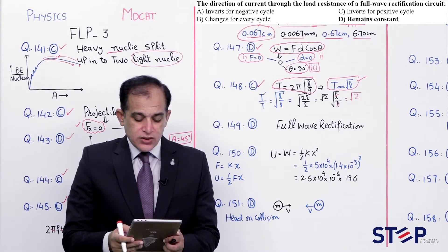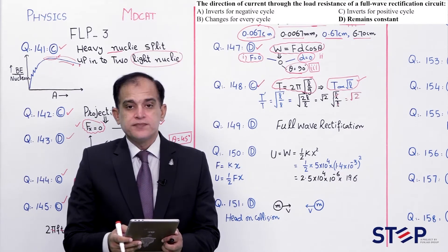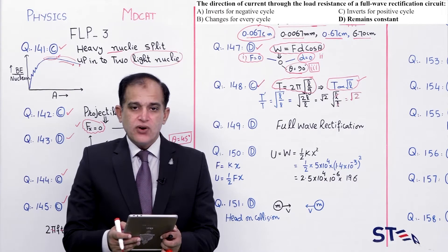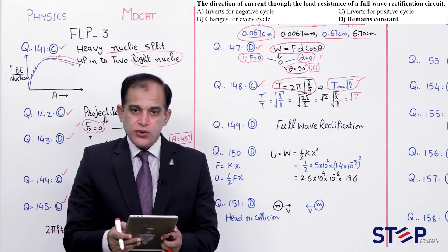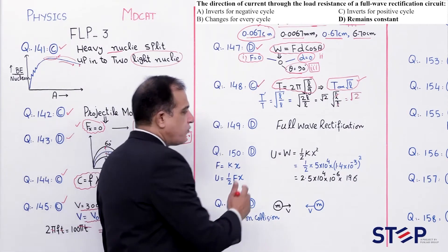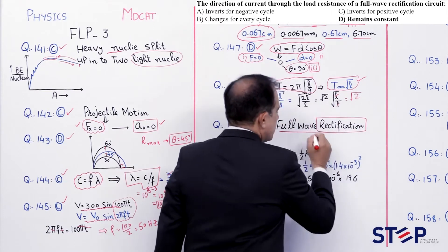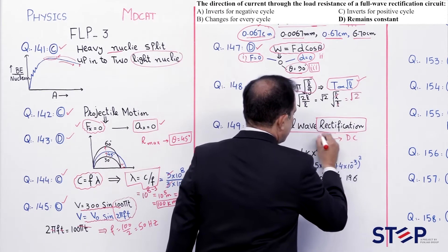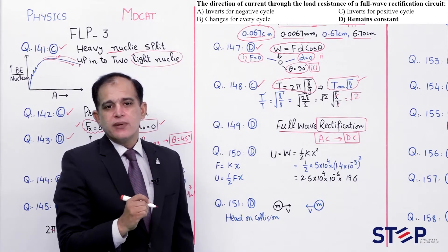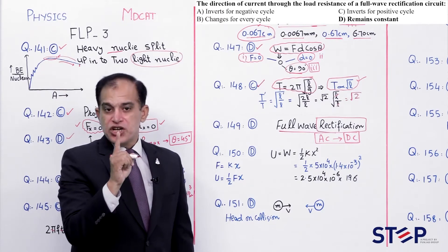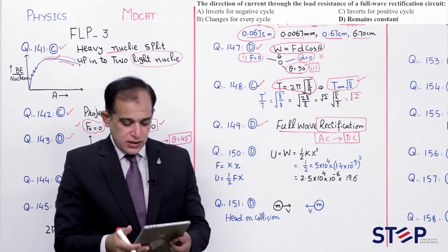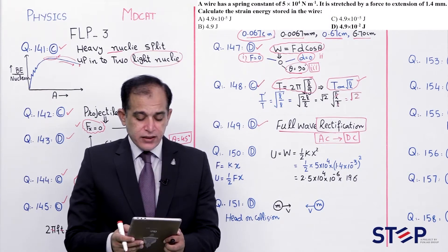Question number 149: Direction of current through load resistance of a full wave rectification circuit. Full wave rectification mein AC ko DC mein convert kiya jata hai. DC mein current apni direction change nahi karta. Toh output signal mein direction constant rahegi. Correct option: Delta.